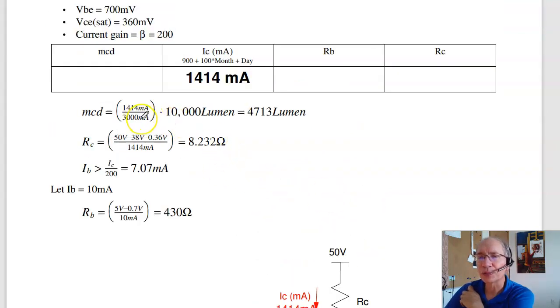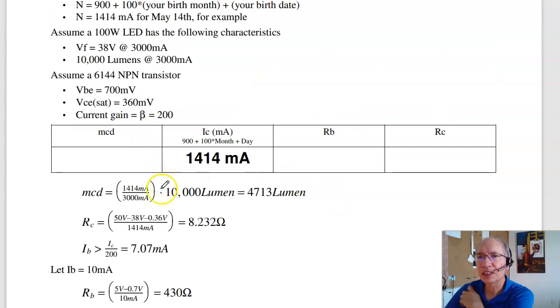In terms of brightness, the brightness is proportional. The datasheets, the specs, say it's 10,000 lumens at 3,000 milliamps. So 1414 milliamps is that percentage of full brightness, 4713 lumens.